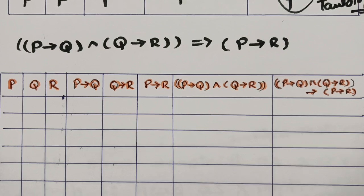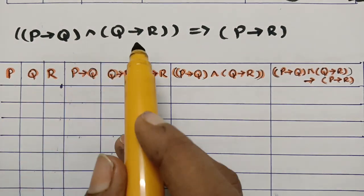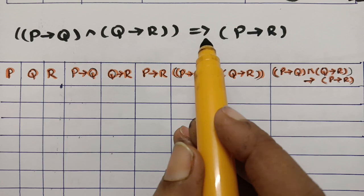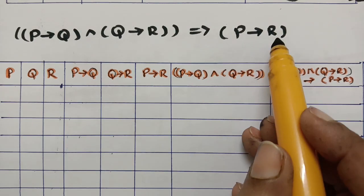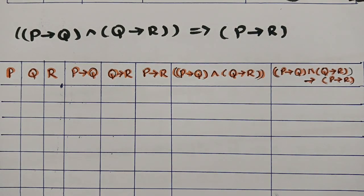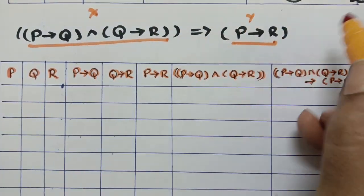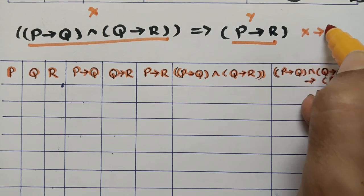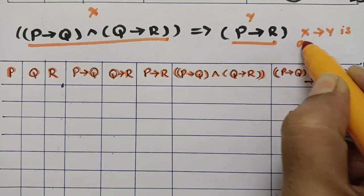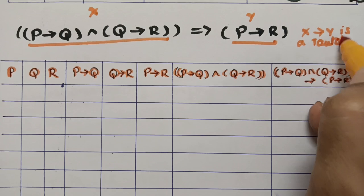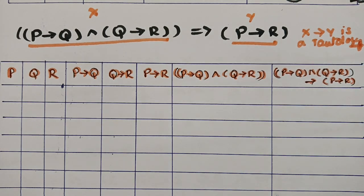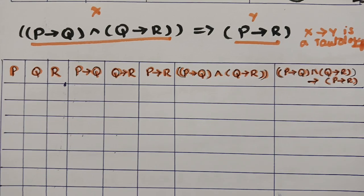The next equation is (p→q)∧(q→r) double implies (p→r). We take (p→q)∧(q→r) as x and (p→r) as y, and we must show x implies y is a tautology. There are three propositions, so the truth table has 2³ = 8 rows.